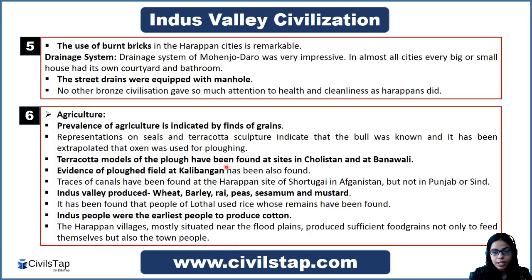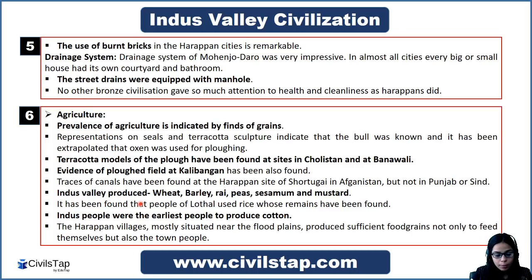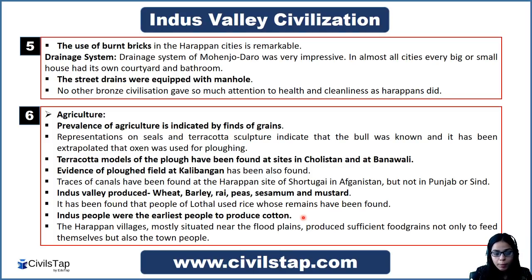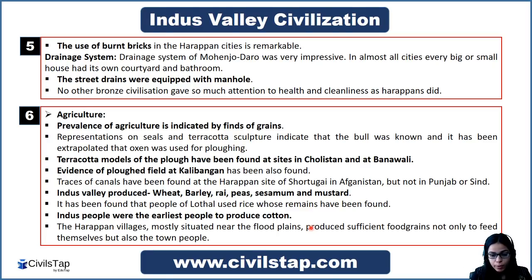We also find evidence of canals from the Harappan site at Shortugai in Afghanistan, though canals are not found in Punjab and Sindh. The people of the Indus Valley produced wheat, barley, rye, peas, sesamum, and mustard. Rice has also been found at Lothal. Remarkably, the people of this civilization were among the earliest in the world to produce cotton. Harappan villages were mostly situated near flood plains and produced sufficient food grains for sustenance as well as for trade.